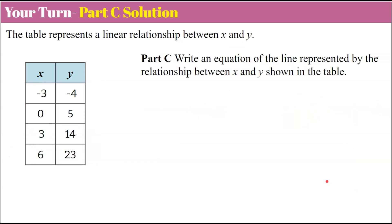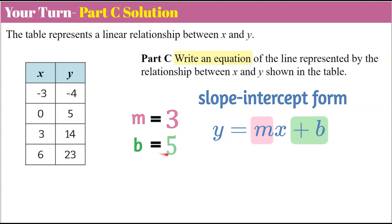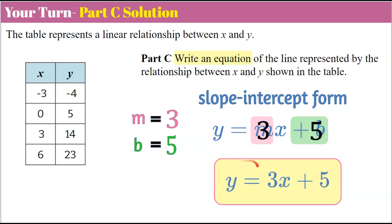In Part C, we write the equation of the line in slope-intercept form: Y equals MX plus B, where M is the slope. We found M equals 3. B is the Y-intercept, and we found B equals 5. Replacing M with 3 and B with 5: Y equals 3X plus 5 is the equation of the linear relationship in this table.